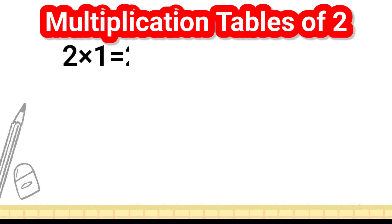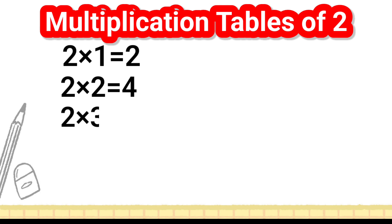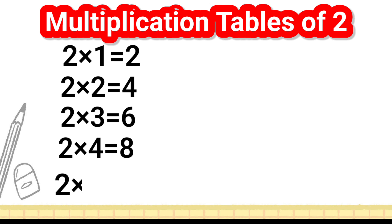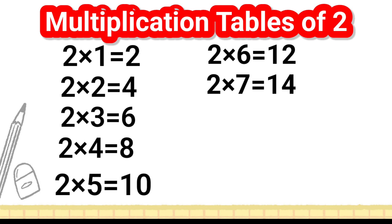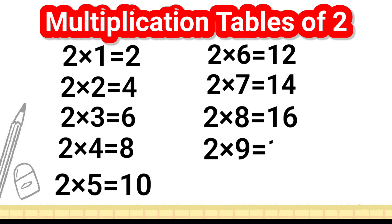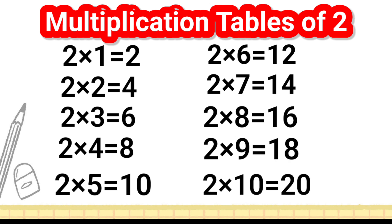2 1's are 2, 2 2's are 4, 2 3's are 6, 2 4's are 8, 2 5's are 10, 2 6's are 12, 2 7's are 14, 2 8's are 16, 2 9's are 18, 2 10's are 20.